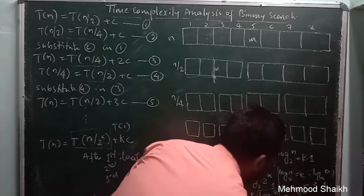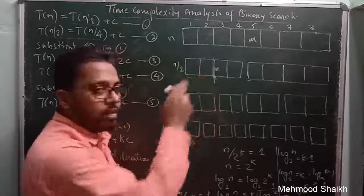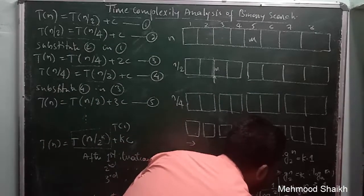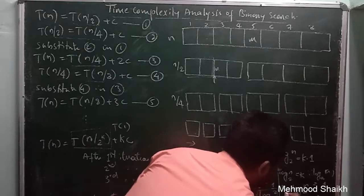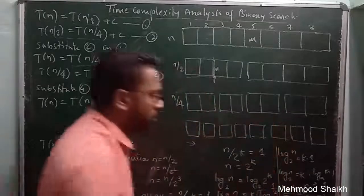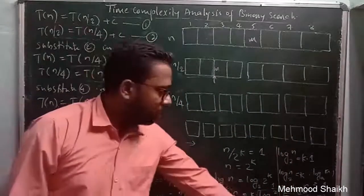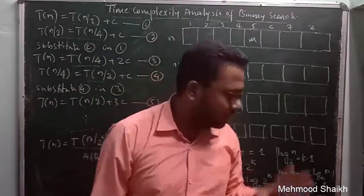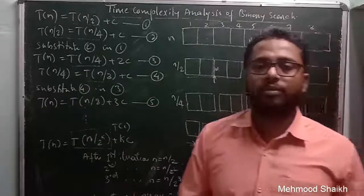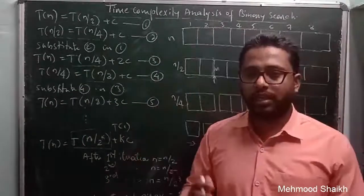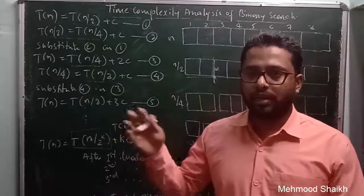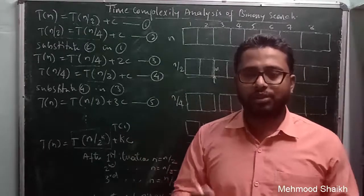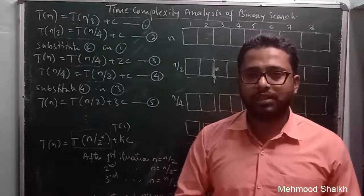Substituting back, the time complexity of binary search in the worst case is O(log n). This is the final time complexity for binary search in the worst case, and that's all for this lesson.